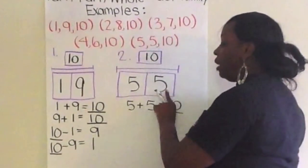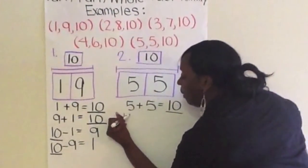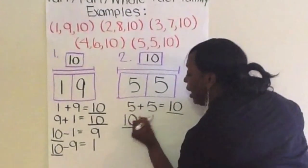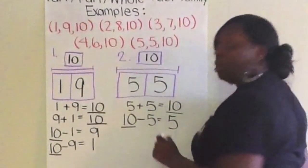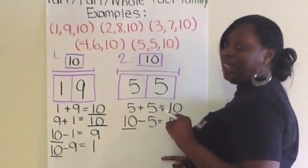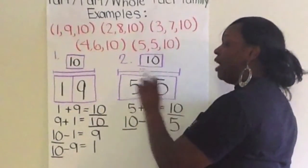Now, show me your subtraction sentence that goes with it. 10 minus 5 equals 5. Put your whole number first. 10 minus 5 equals 5. Once again, if you flip it around, it's still going to be 10 minus 5 equals 5.